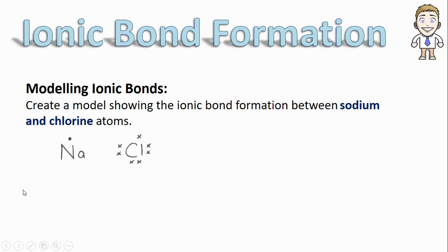So the first step and probably the most important step is to write the electron dot diagram for each atom involved. So I've got sodium with one dot for its one valence electron and chlorine with seven for its seven valence electrons.